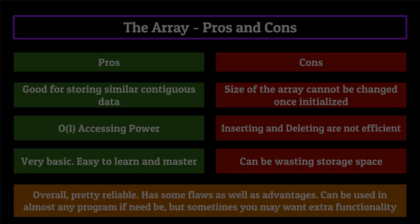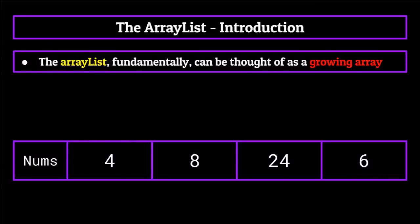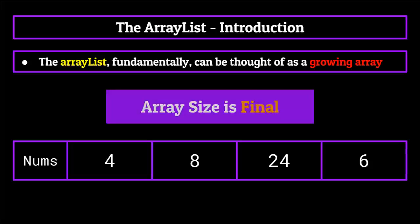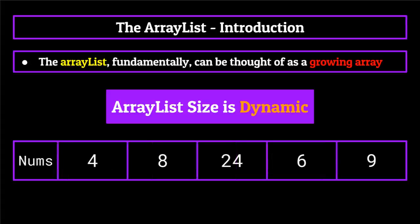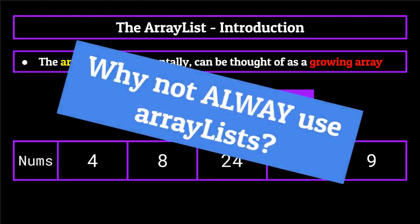One of those more advanced data structures is what's known as the array list. The array list fundamentally can be thought of as a growing array. One of the major flaws of an array was the fact that once initialized, its size could not be changed using conventional methods. Well, in contrast, an array list size expands as the programmer needs. If you take a look at an array list full of four elements, and you decide to add one to it, it will simply expand its size to fit five elements. This begs the question of why not just always use array lists. The array list seems to provide all the functionality of an array and then some. An array list is simply a resizable array, making them extremely similar in structure. This is furthered by the fact that an array list is actually backed by an array in memory — meaning behind the scenes, the array list data structure uses an array as its scaffolding system.